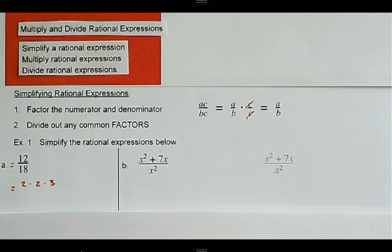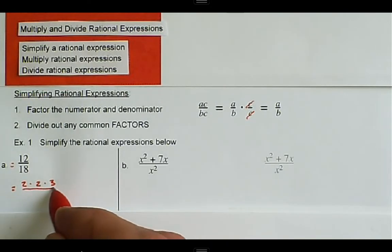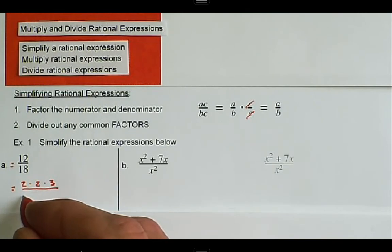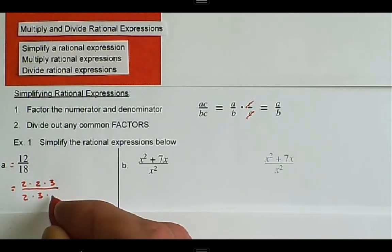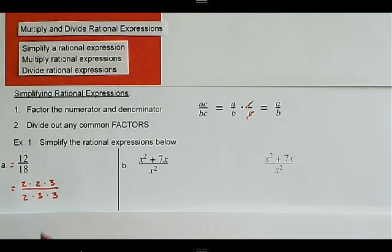If I multiply those all together, I will get 12. In the denominator, we can say 2 times 3 times 3. So these numbers multiply together make 12, these numbers multiply together make 18.